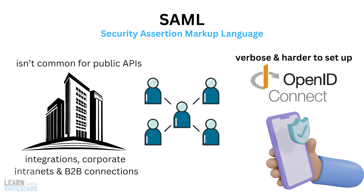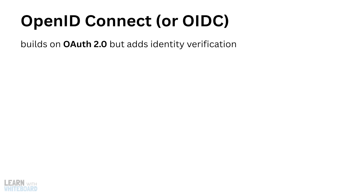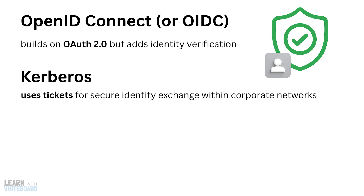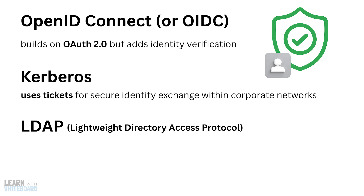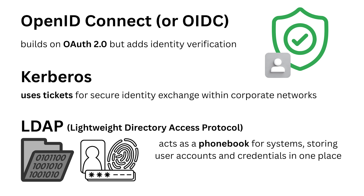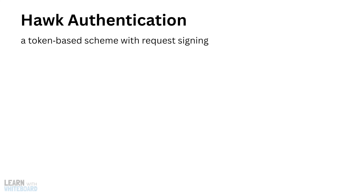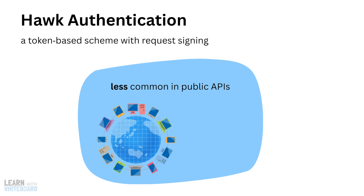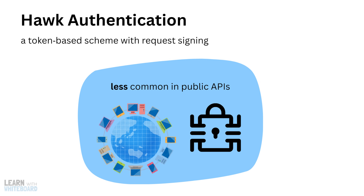Lastly, there are some honorable mentions. OpenID Connect, or OIDC, builds on OAuth 2.0 but adds identity verification, so the system can also confirm who the user is. Then there are enterprise-only methods like Kerberos, which uses tickets for secure identity exchange within corporate networks, and LDAP, or Lightweight Directory Access Protocol, commonly used for centralized directory services — it acts as a phone book for systems, storing user accounts and credentials so multiple applications can rely on the same source of truth. There are also more experimental approaches like HAWC authentication, a token-based scheme with request signing. These methods are far less common in public APIs but exist in specialized environments requiring tighter enterprise integration or additional cryptographic safeguards.